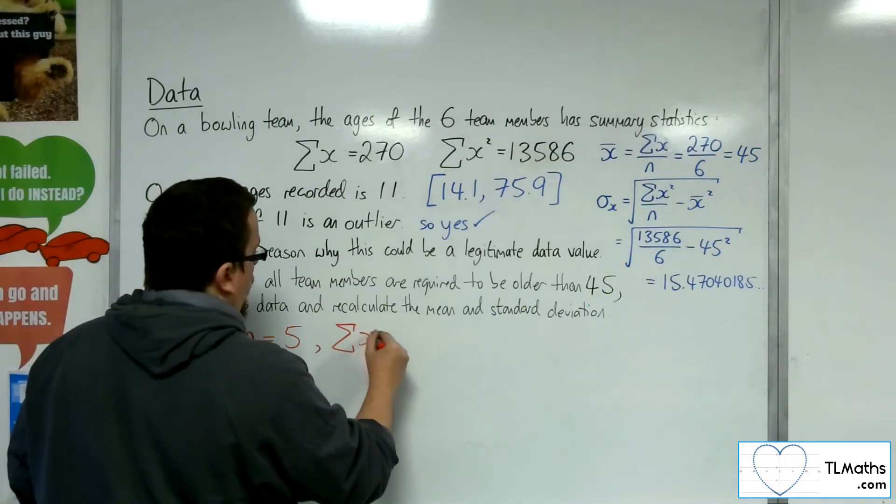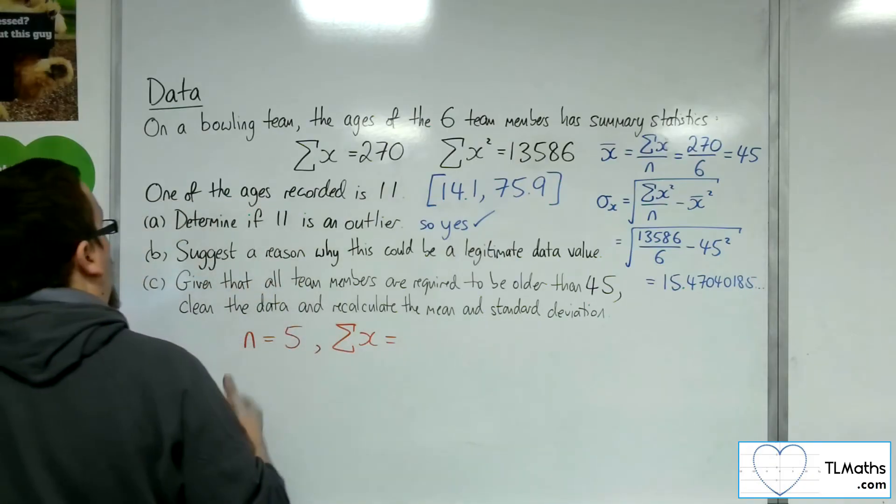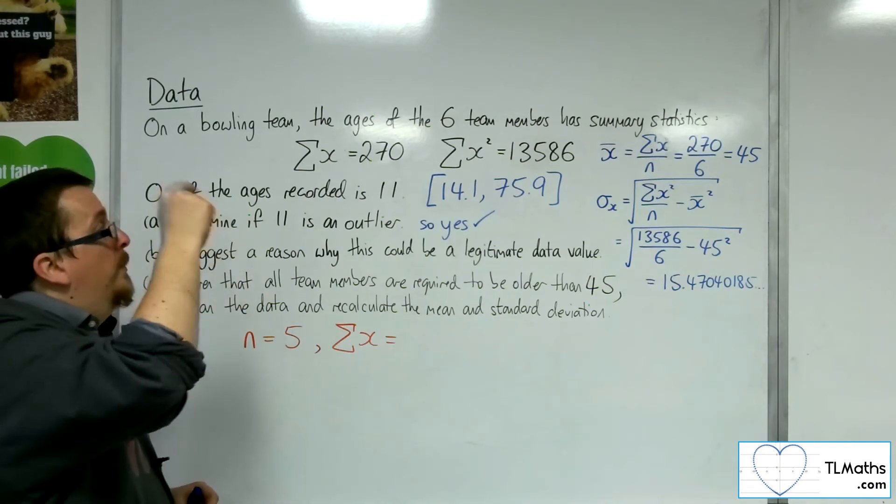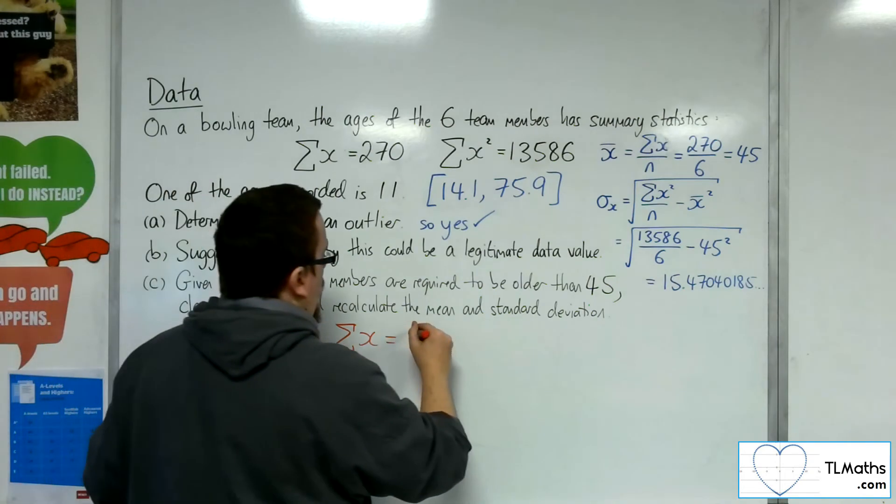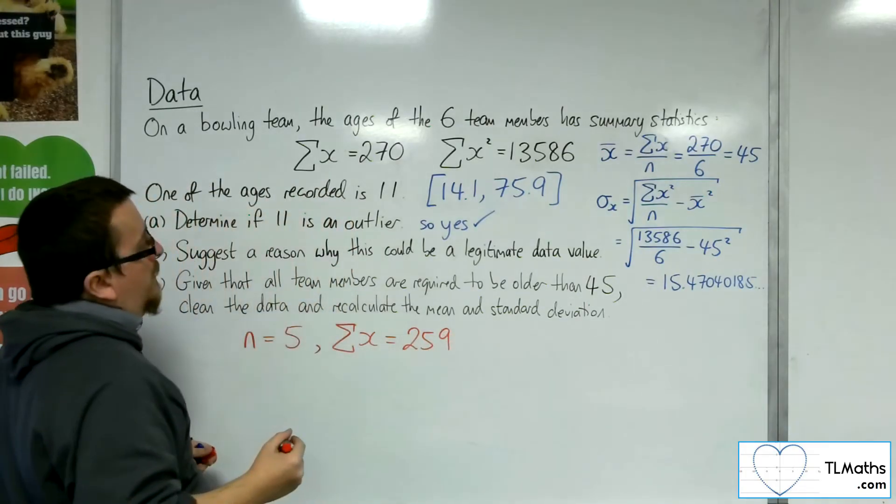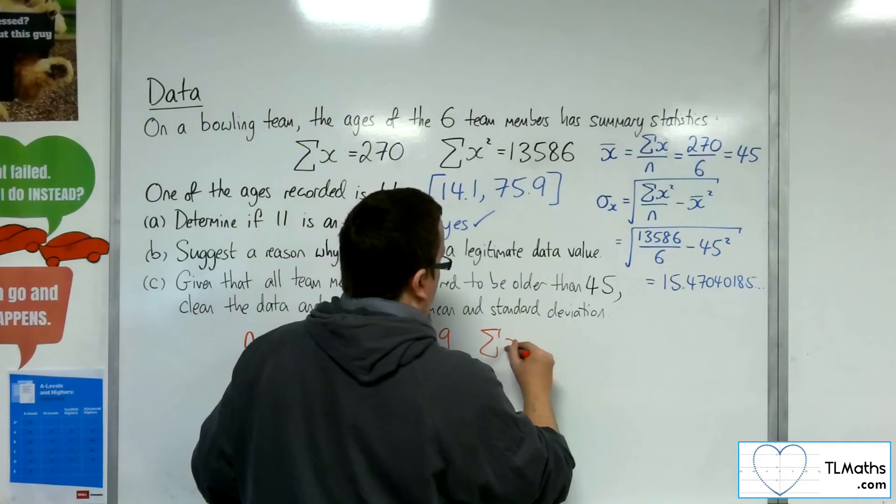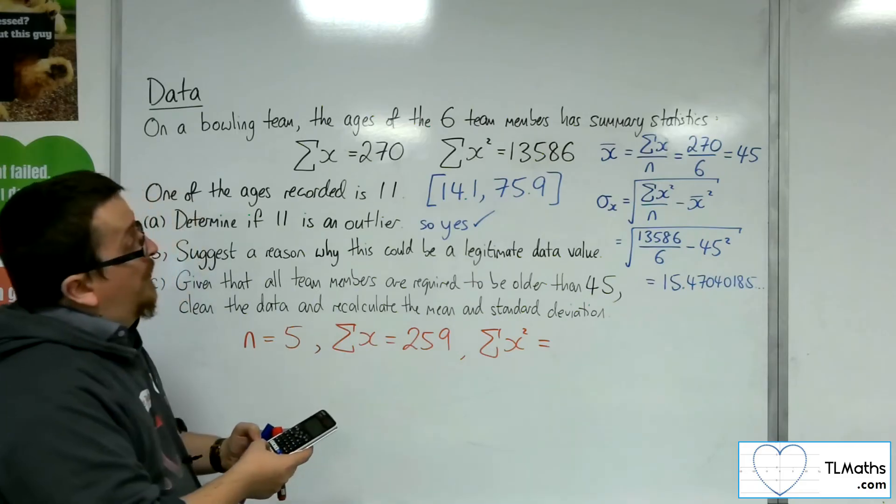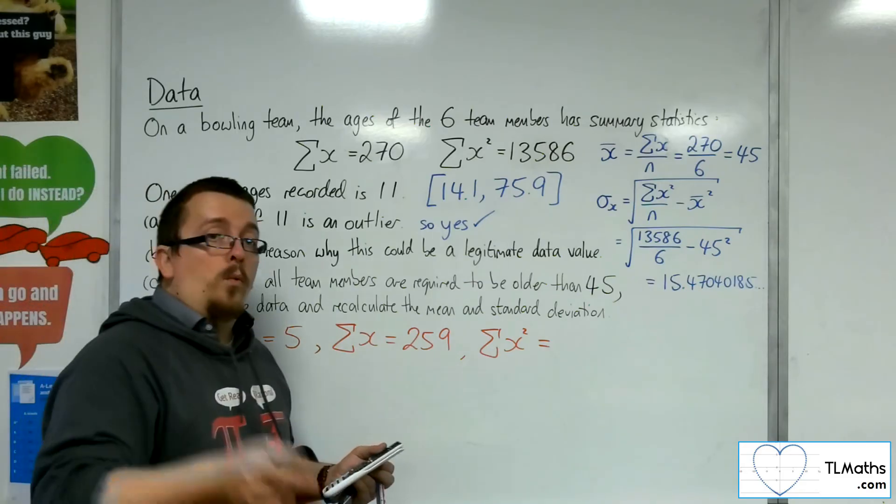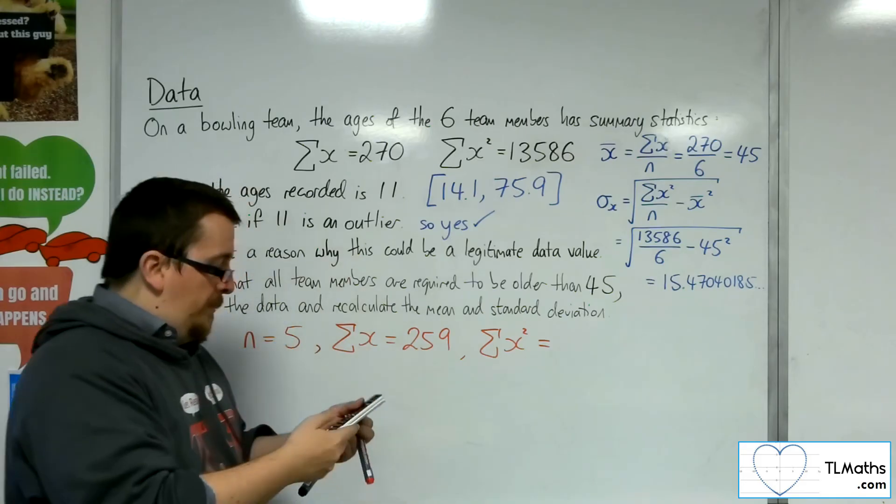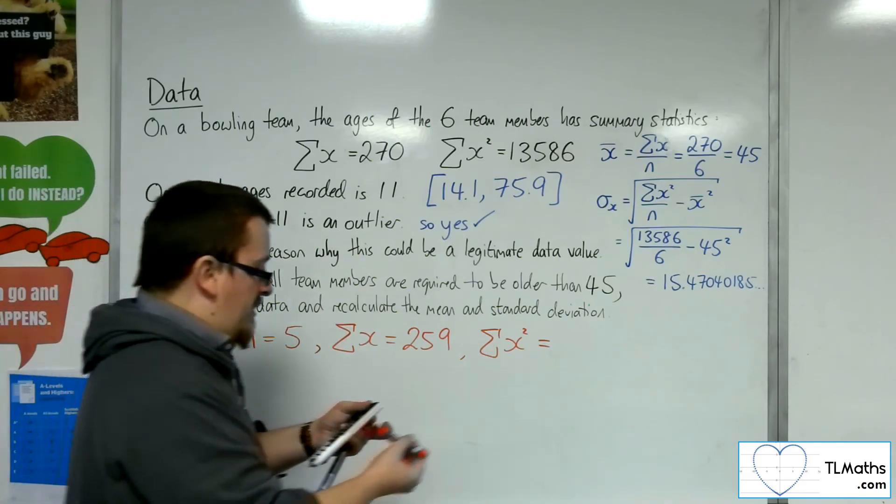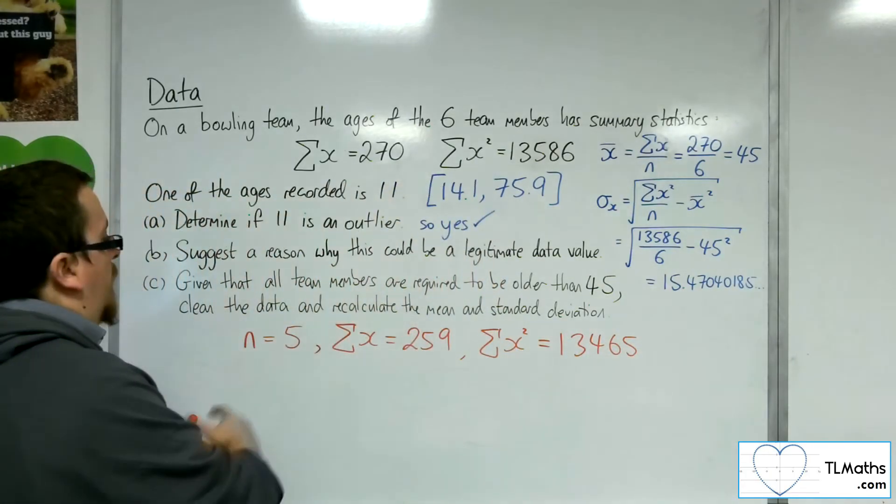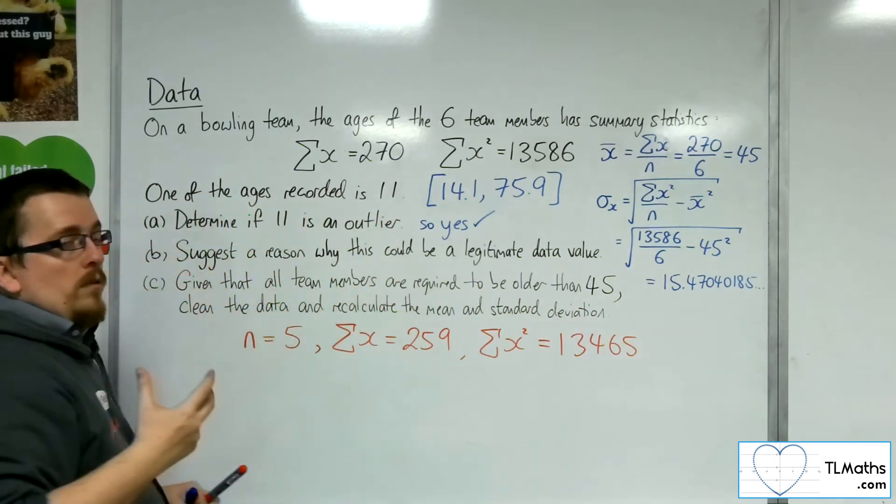Now the sum of x, sum of all the x's, will be 270, take away the data item that we know is wrong, so we take away 11. So that would get us back down to 259. The sum of the x squareds, that's the 13,586, take away the 11 squared that has been recorded incorrectly. So that gets us to 13,465. So this is the new summary statistics.